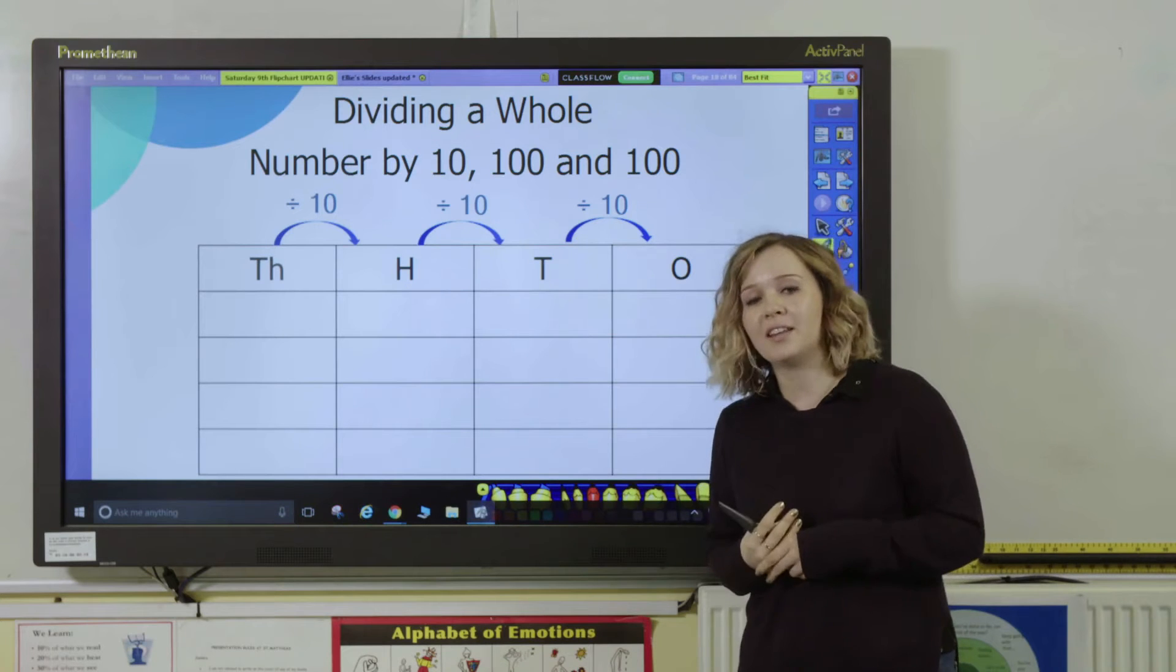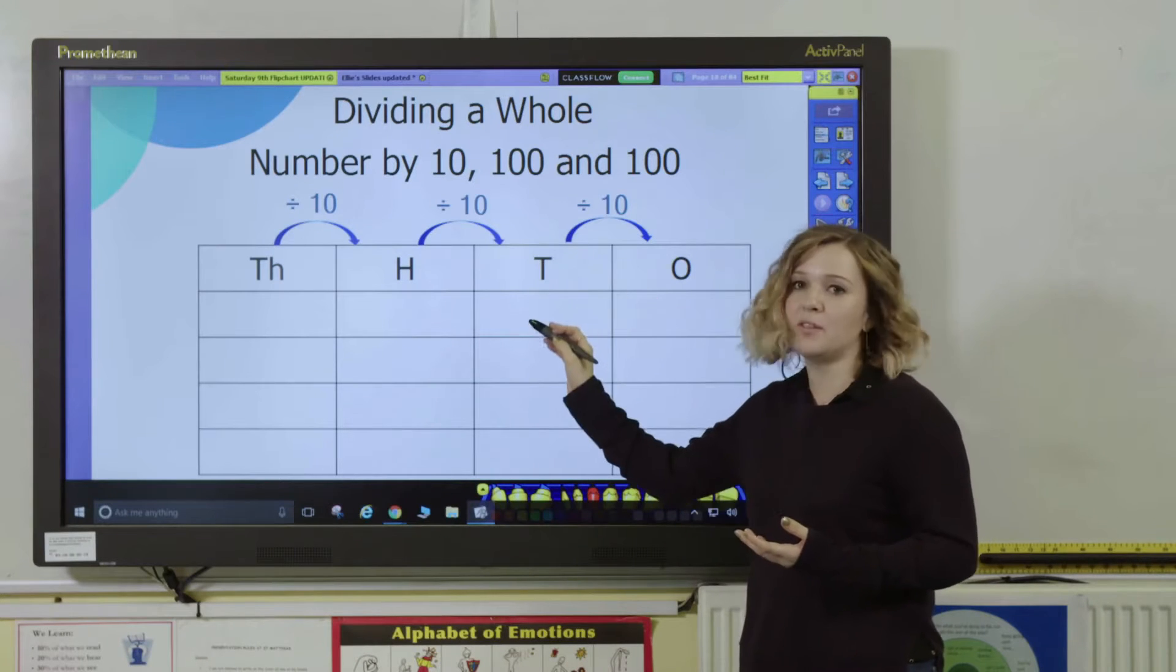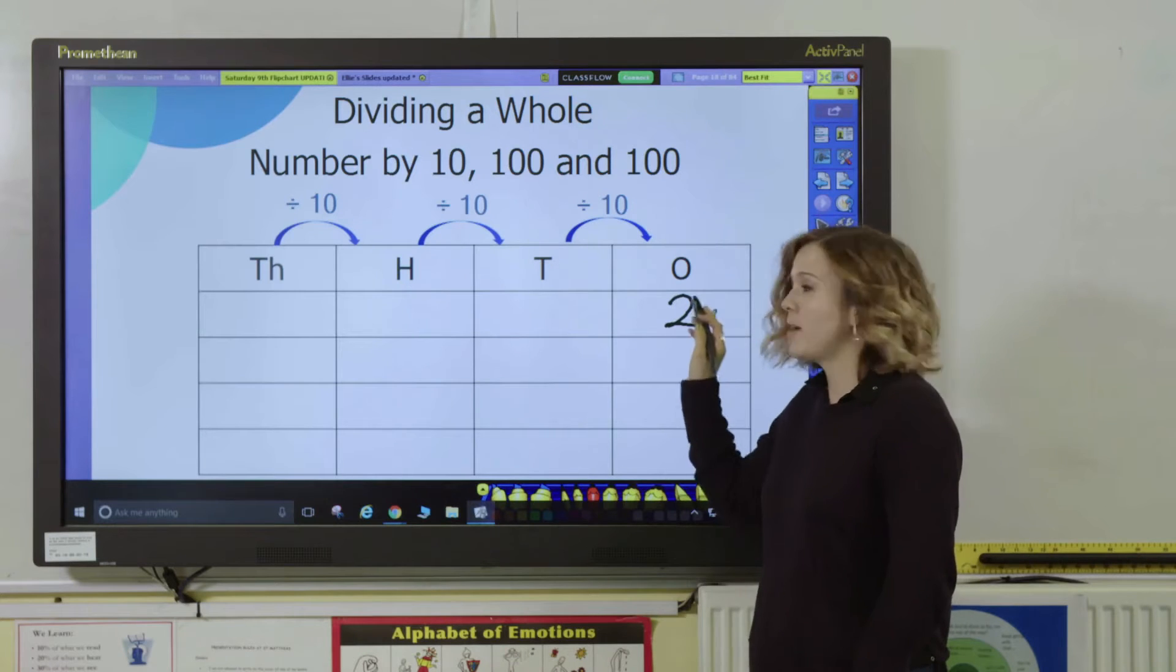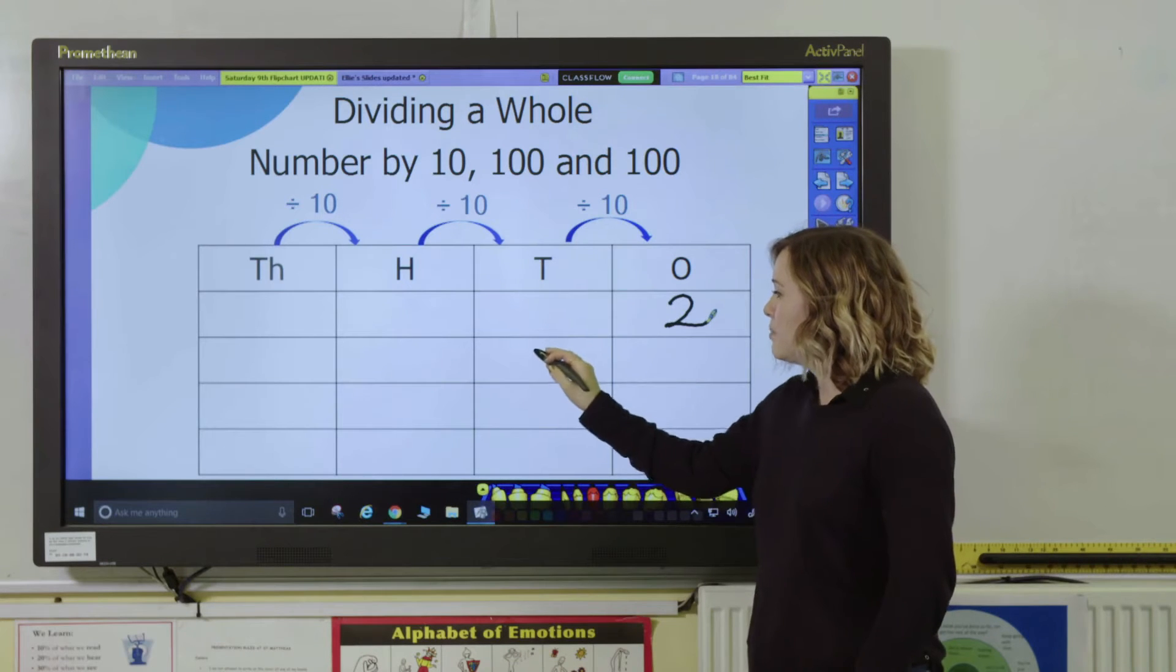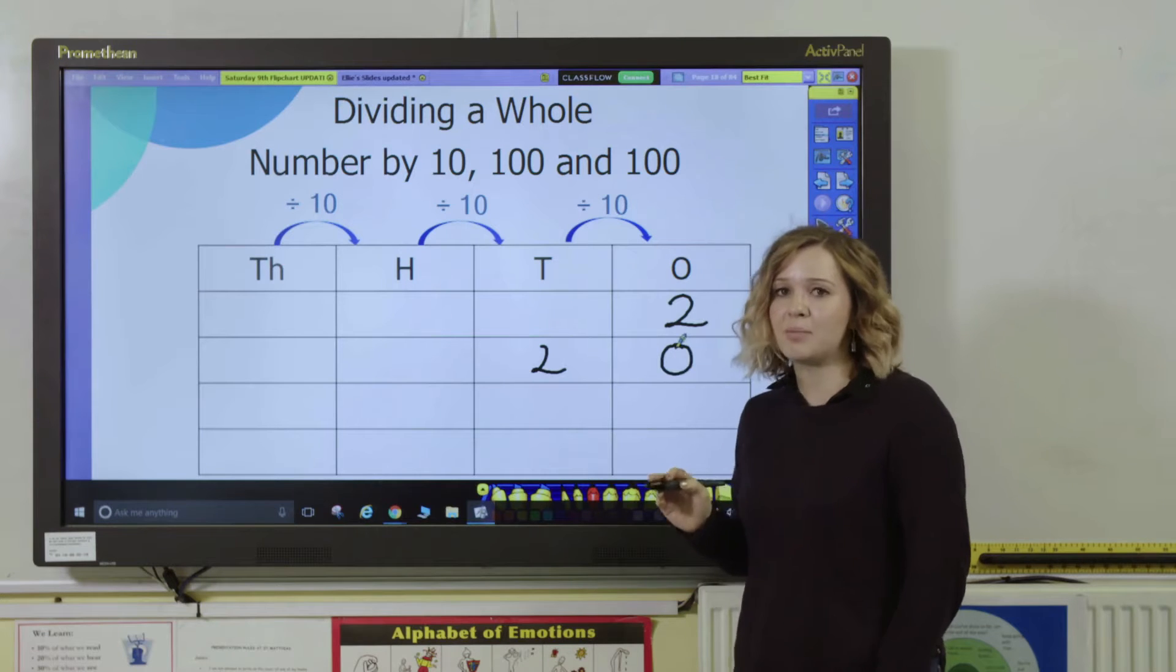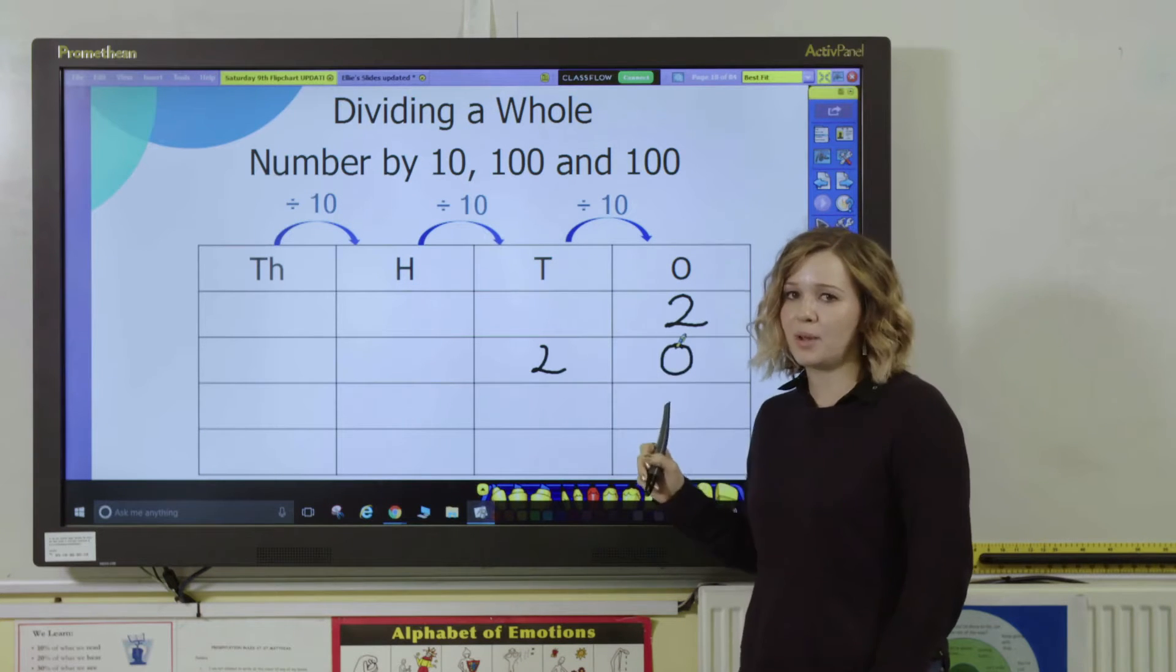Now you want to link it to multiplication. If pupils have been working on multiplying by ten, hundred, and a thousand, they would have seen that when we times something by ten it moves a space to the right. For example, if I have the number two, if I multiply that by ten my two moves to the tens column and I put a zero in here as a placeholder in the ones column. So two times by ten becomes twenty.